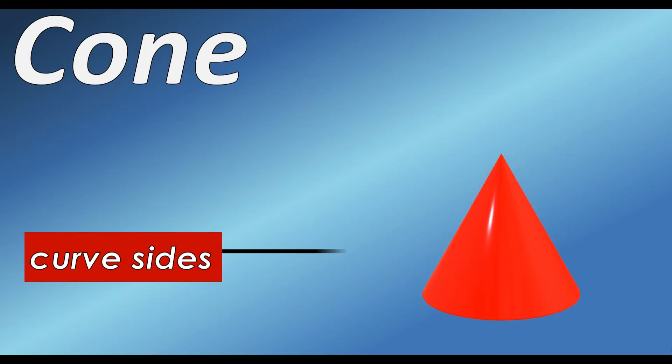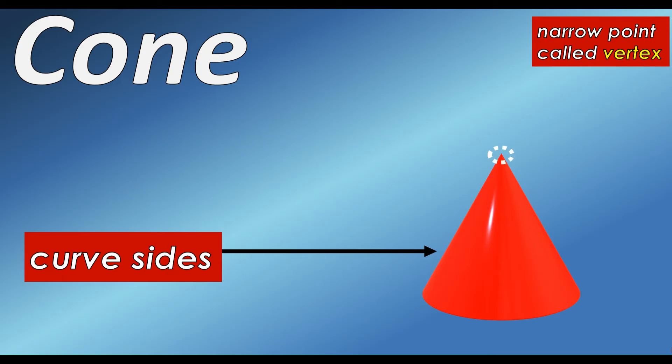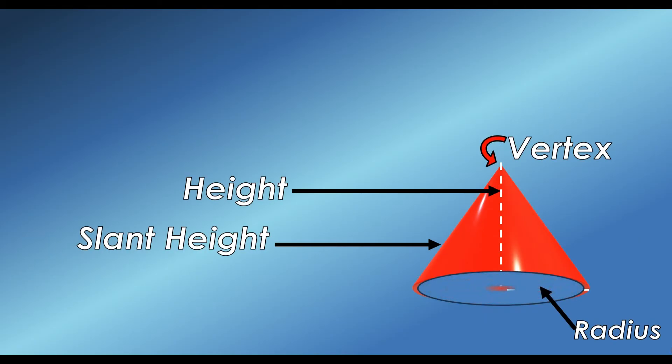This is the curved sides of the cone and the narrow point which is called the vertex. Furthermore, the cone has its height, slant height, vertex, and circular base.